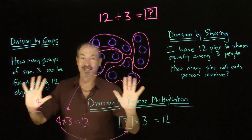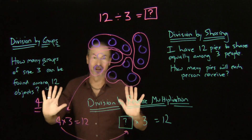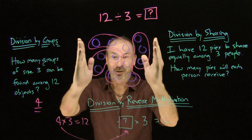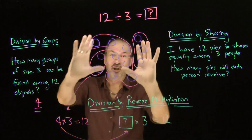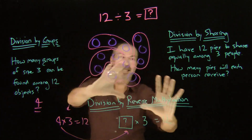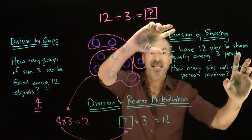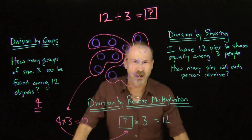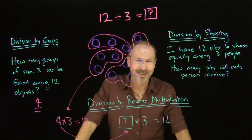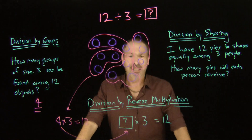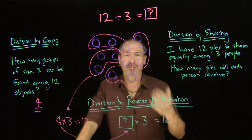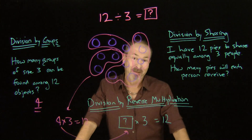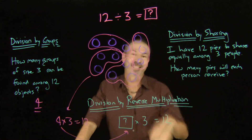Two different interpretations of this one picture explain why those two interpretations have the same answer. Now my challenge is: can I look at this same picture and interpret it in a way that makes sense for thinking of division as sharing? Is this really a picture of sharing? Let's see if we can interpret that picture as a sharing problem — and I bet the answer is going to be 4.